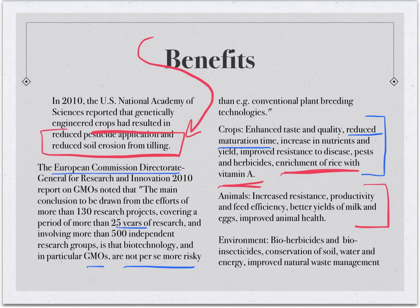In animals, GM technology can deliver better yields, improved animal health, and improved resistance to germs and bacteria. If plants are more drought resistant, you don't have to use as much water on the cropland, or you don't necessarily have to use as much pesticide or herbicide. So there are a lot of benefits — that's the benefit side.